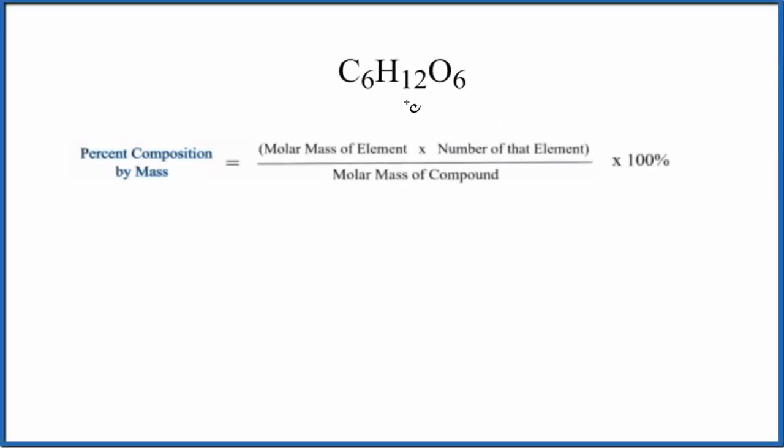In this video, we'll find the percent composition for each element here in C6H12O6. This is the formula for glucose.